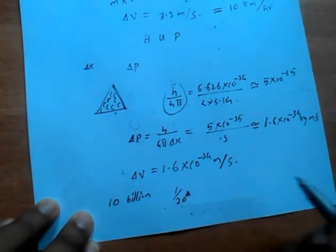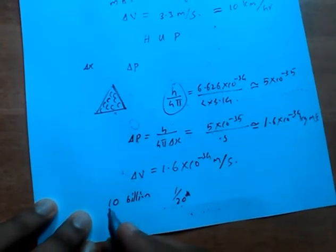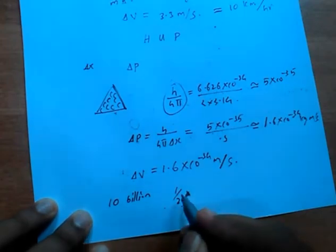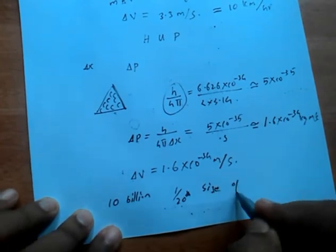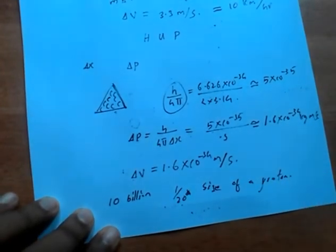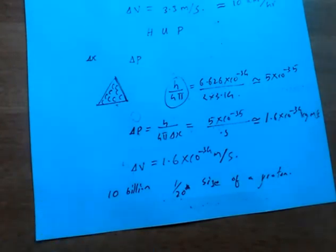That means in 10 billion years, the billiard ball moves a distance of only 1/20th the size of a proton. Ten billion years means a thousand crore years — and in a thousand crore years this billiard ball moves just 1/20th the size of a proton. That means in our daily life experience, quantum mechanics doesn't have any effect, because in 10 billion years a distance of 1/20th the size of a proton is completely meaningless.